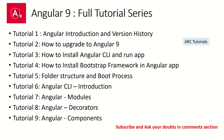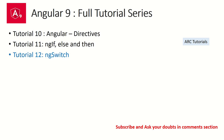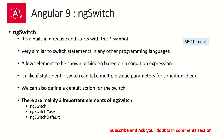So far in the Angular 9 full tutorial series we have covered topics from basic to advanced — modules, decorators, components, directives, ng-if/else — and in today's episode we will learn about ng-switch. ng-switch is a built-in directive that starts with the asterisk symbol, just like ng-for and ng-if, and is very similar to switch statements you've used in other programming languages.